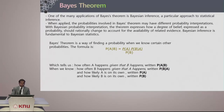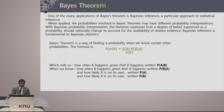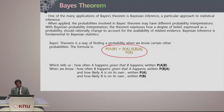Bayes theorem is very similar to what we have seen — the conditional probability. It is applied in Bayesian inference and various Bayesian probability interpretations, including Bayes networks and belief networks. The Bayes theorem formula states: probability of A given B equals probability of A times probability of B given A, divided by probability of B.